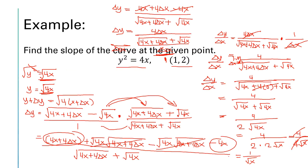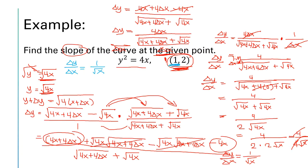This is our delta y over delta x. However, we still need to find the slope at the given point. So delta y / delta x = 1/√x. Substituting x = 1, we get 1/√1 = 1. So the slope at the given point is 1. This is our final answer — the slope of the curve is equal to 1.